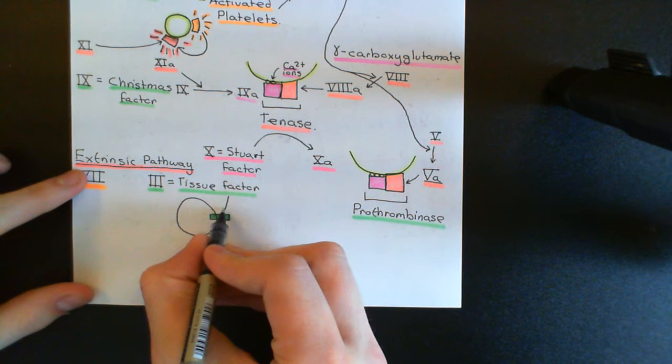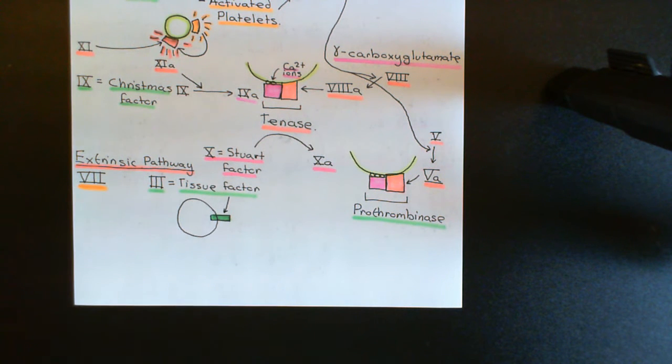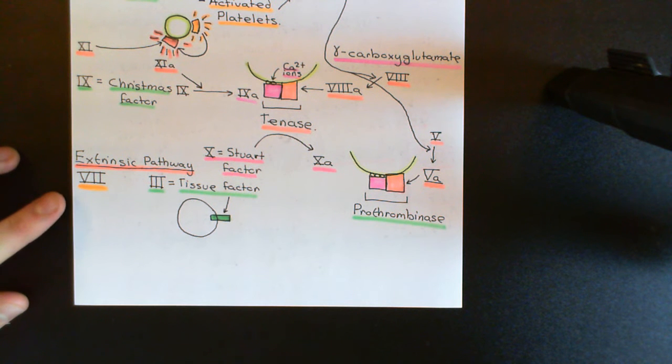Normally, coagulation factor 7, which is a normal one produced by the liver and has two forms, the inactive and the active form, would never normally ever be allowed to see tissue factor. It would go around inside the lumen of the blood vessel and never see tissue factor because the endothelial cells do not have tissue factor on their apical surface, and all factor 7 sees is what is on the apical surface of the endothelial cells.